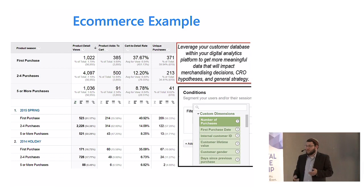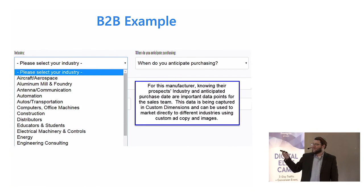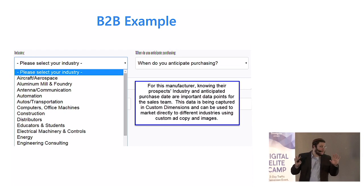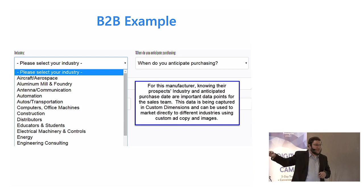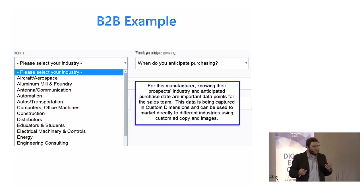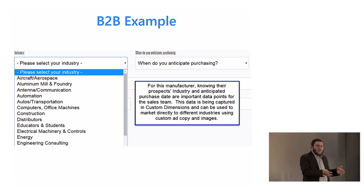Or a B2B example: I worked with a company that manufactured linear actuators — very important because these are the things that make airplanes not fall out of the sky. They're getting lead information through a form: what industry are you in, when do you anticipate purchasing? That's a really important piece of information. Once you collect that and it's in your analytics, you can segment by it and remarket to them. The structure of your website really does tell that story.